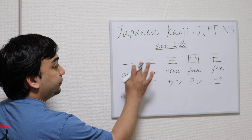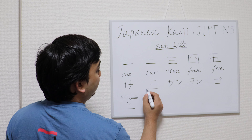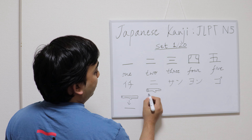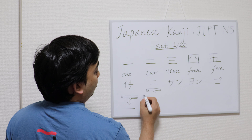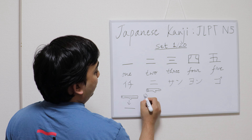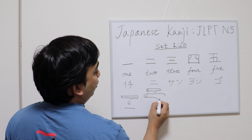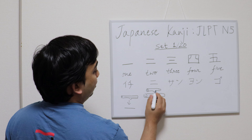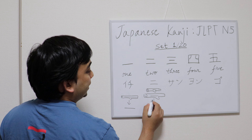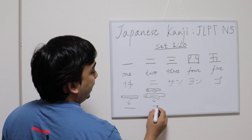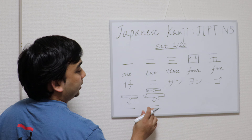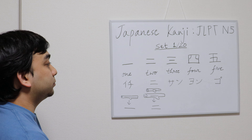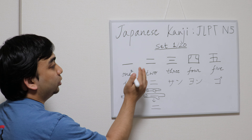Next, for two, you can consider two logs like this. The lower log is a bit longer than the upper log. So this can be represented as ni, meaning two.